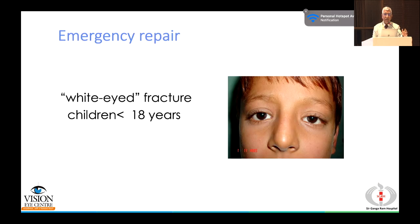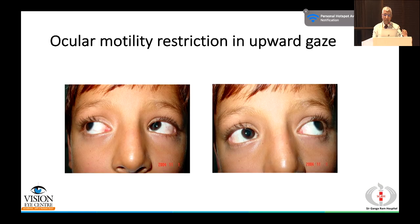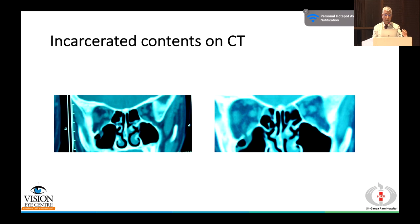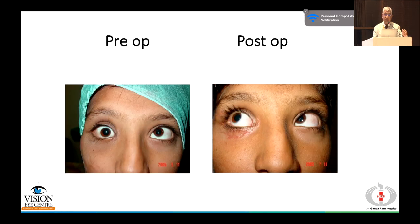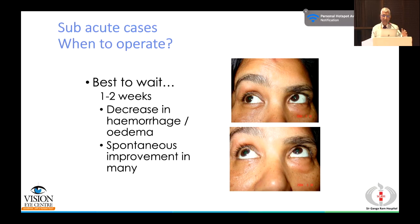A special consideration in children under 18 years is the 'white-eyed' or 'green-stick' fracture where tissues become incarcerated and bones rebound. Diplopia with muscle or soft tissue entrapment can trigger an oculocardiac reflex — an emergency with lowering of pulse and nausea — requiring urgent treatment. Sub-acute repairs for enophthalmos or hypophthalmos cases wait one to two weeks. The transconjunctival or swinging eyelid approach is used, giving an incision below the tarsal plate extending to the lateral canthus.